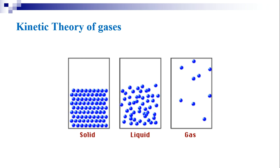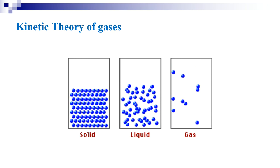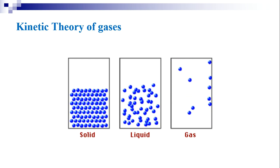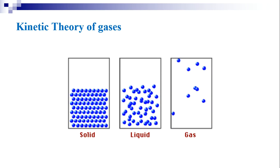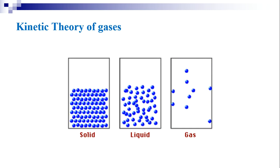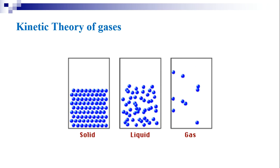Before going to the discussion, let us recall the kinetic theory of gases. According to kinetic theory of matter, every substance consists of a very large number of small particles called molecules. On the screen you can observe the three states of matter: solid, liquid, and gaseous state. The molecules in all three states are always in continuous motion.